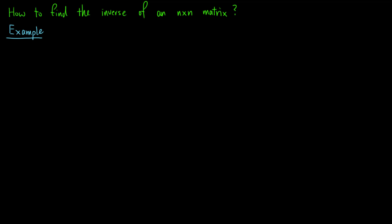Suppose we want to find the inverse of the following matrix: A equals [1, 3, -2; 2, 5, -3; -3, 2, -4].